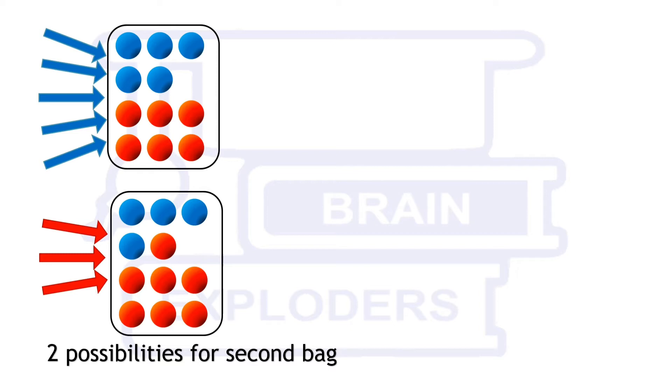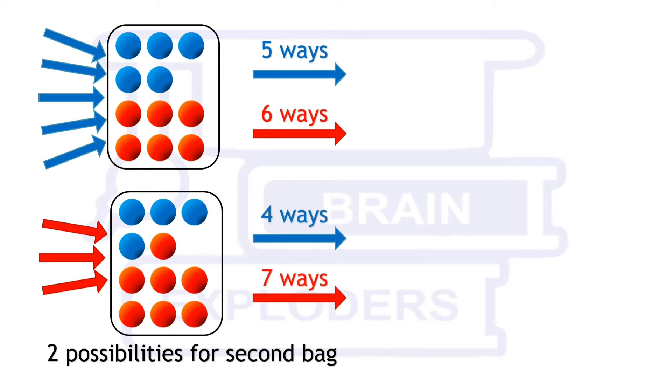But we do not know which condition of second bag we have. If we have first condition then there are five ways of selecting a blue ball and six ways of selecting a red ball. If we have second condition then there are four ways of selecting a blue ball and seven ways of selecting a red ball.